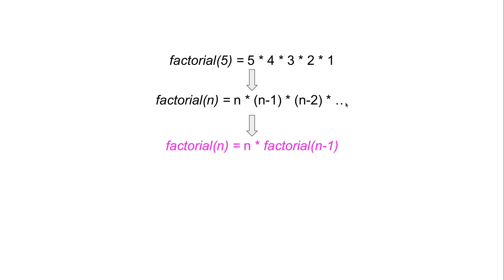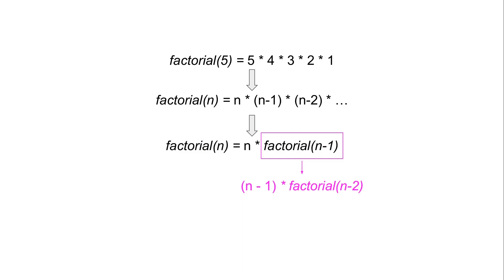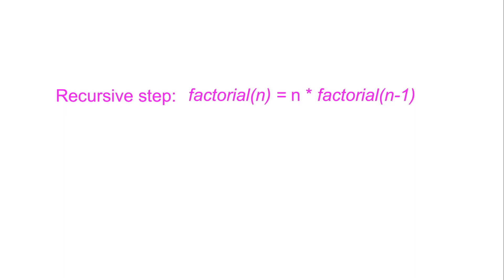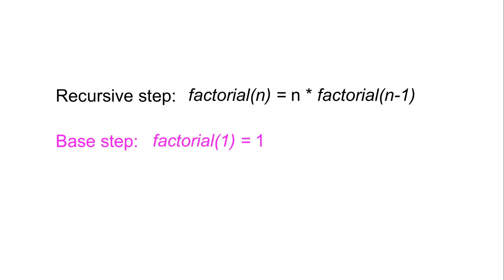So let's do this substitution — we can rewrite factorial of n as a function of the factorial function itself. Factorial of n minus 1 is itself equal to n minus 1 times factorial of n minus 2. In other words, we could have a bunch of recursive calls to the same factorial function in order to calculate factorial of n. We've now defined the recursive step for factorial. What's missing is the base case, and the base case is this: factorial of 1 is equal to 1. Now let's move from this mathematical definition to a Python implementation of factorial.